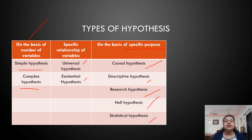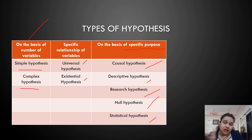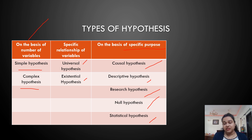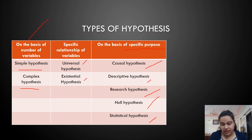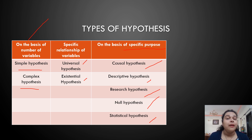So these are the types of hypothesis on the basis of three major classifications. I hope students, in today's video we have learned what the characteristics of hypothesis are and how many types of hypotheses we normally see in research. We'll see you in the next video. Till then, take care of yourself and your family members. Bye.